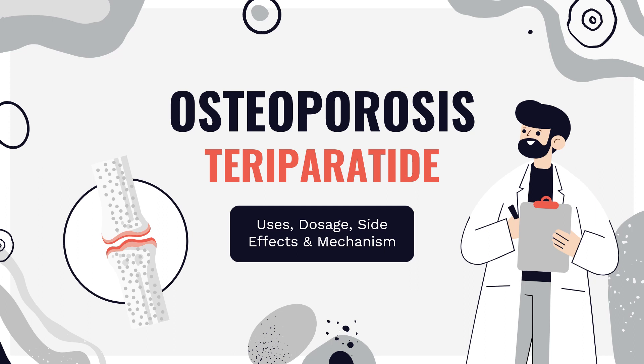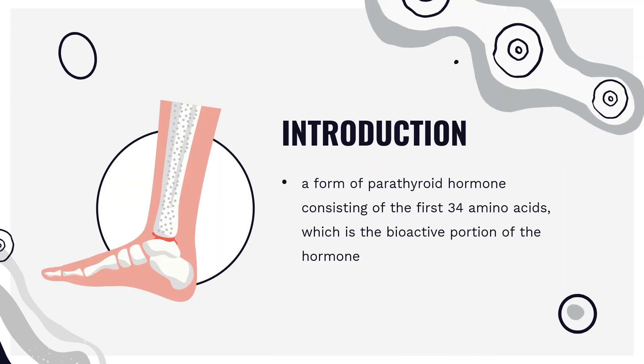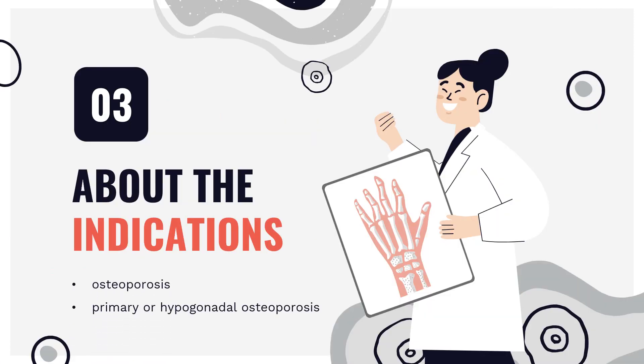Teriparatide is a recombinant parathyroid hormone used for the treatment of osteoporosis. Teriparatide, sold under the brand name Forteo, is a form of parathyroid hormone consisting of the first 34 amino acids, which is the bioactive portion of the hormone. It is an effective anabolic agent used in the treatment of some forms of osteoporosis. Teriparatide is a recombinant human parathyroid hormone analog.